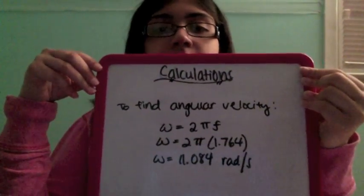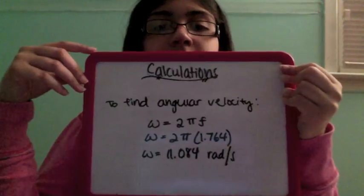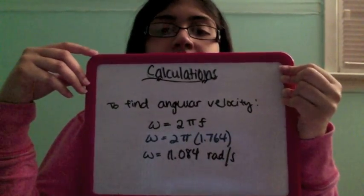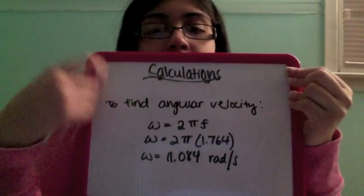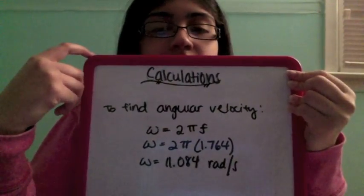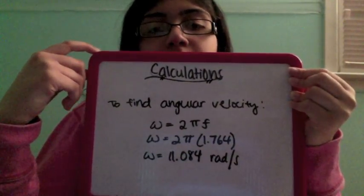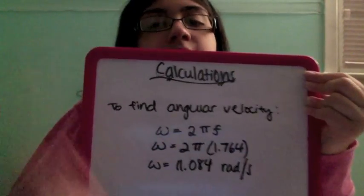To find angular velocity, the formula was omega equals 2 pi frequency. We plugged in the numbers and found that the angular velocity is 11.084 radians per second.